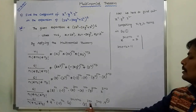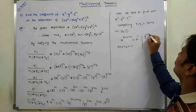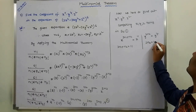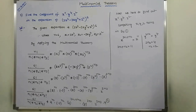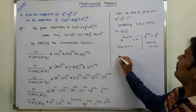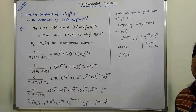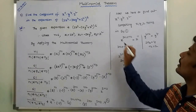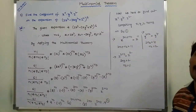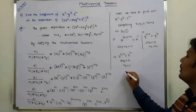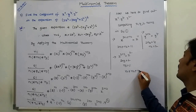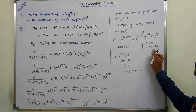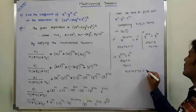Comparing y terms: y power 2n2 equals y power 4, so 2n2 equals 4, giving n2 equals 2. Comparing z terms: z power 2n3 equals z power 2, so n3 equals 1. Also, n1 plus n2 plus n3 equals 6.